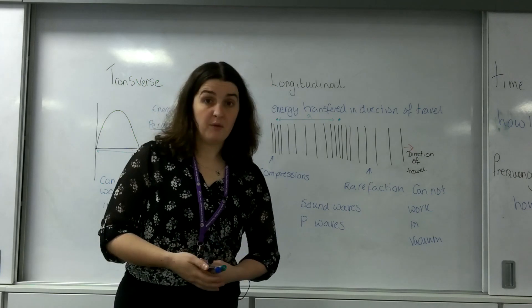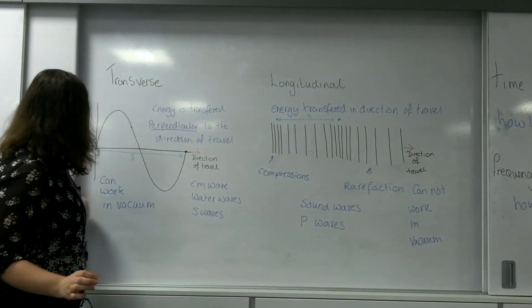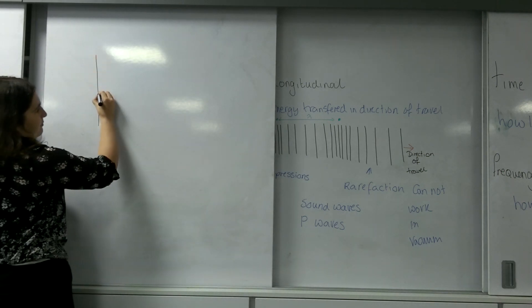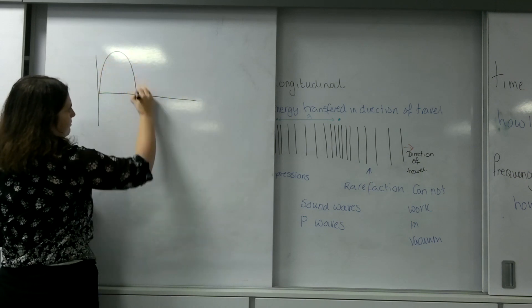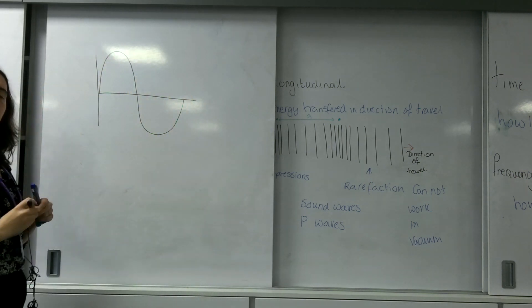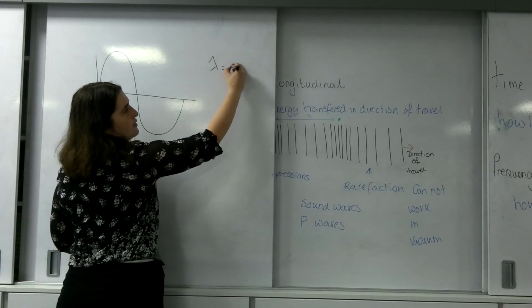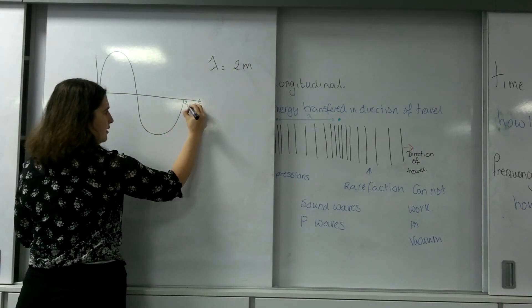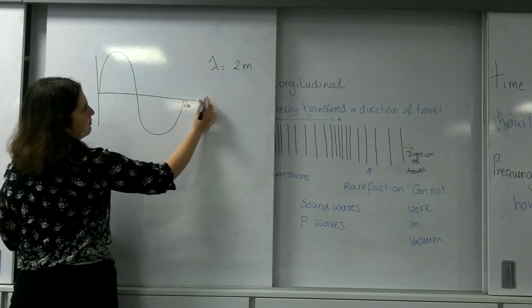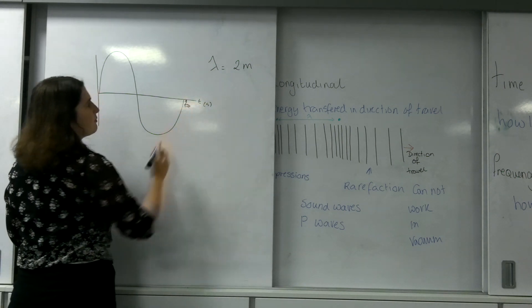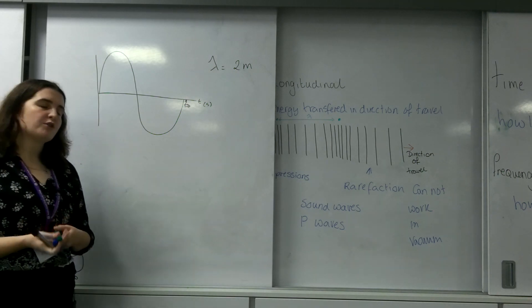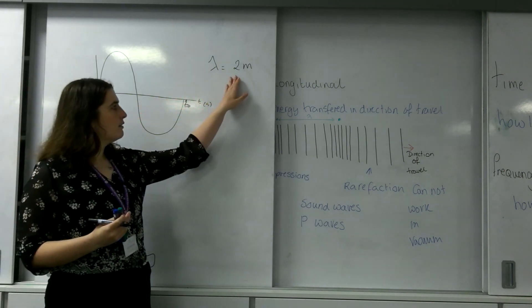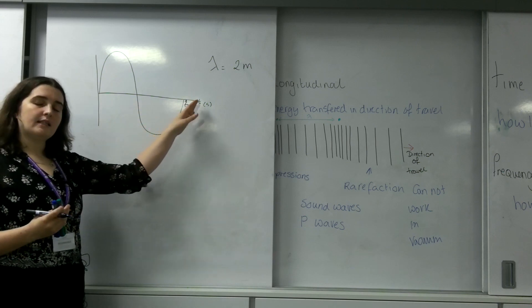I'll give you an example of the wave equation. If I had a wave here, I was told its wavelength is 2 meters, and I was given this graph here, I was asked to work out the velocity of this wave. I know its wavelength and I know the time it takes to do one wave.